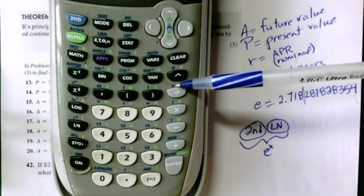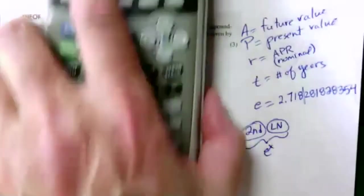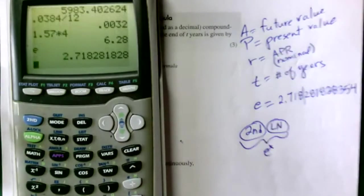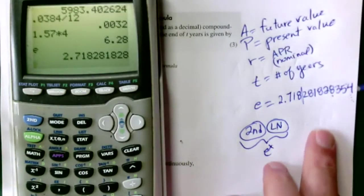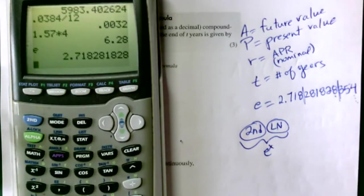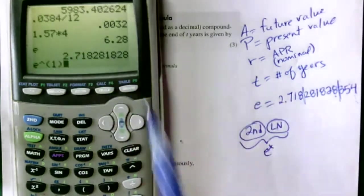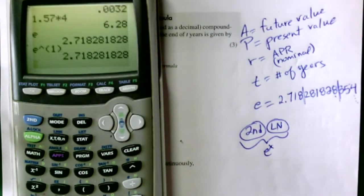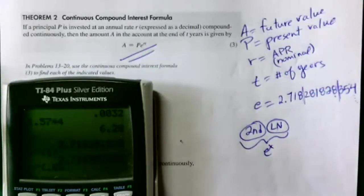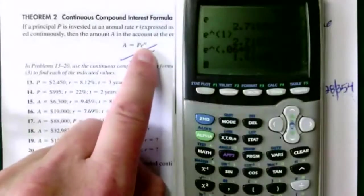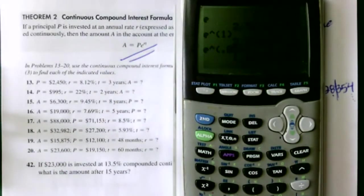There's also a key just for the number e itself, found above the division sign. If you press second then LN and raise it to the first power, you get the same value as the e key. For continuous compounding problems, you'll typically compute something like e to the (0.06 times 8) — the interest rate times number of years in the exponent — and then multiply by P.